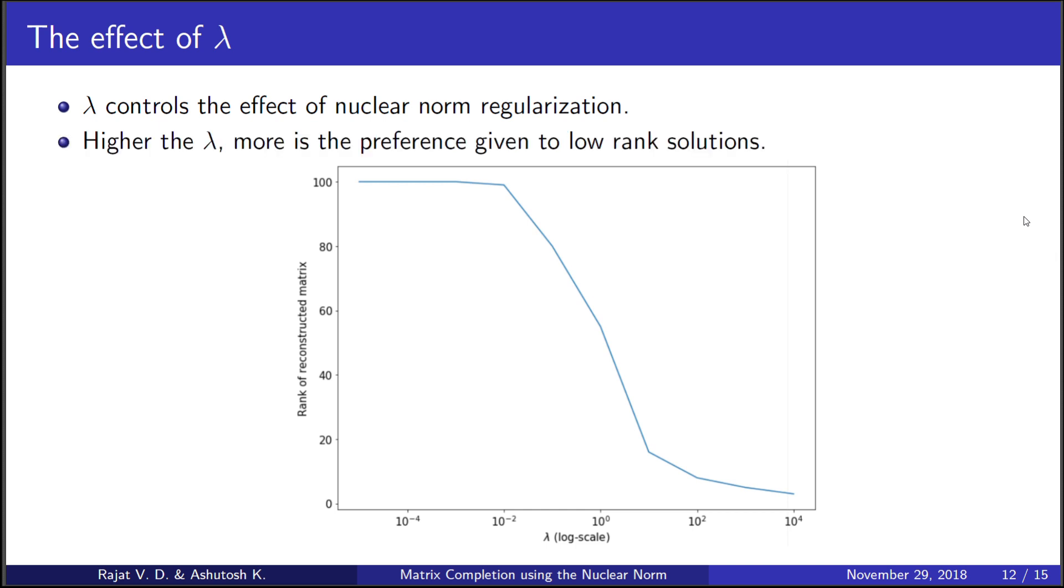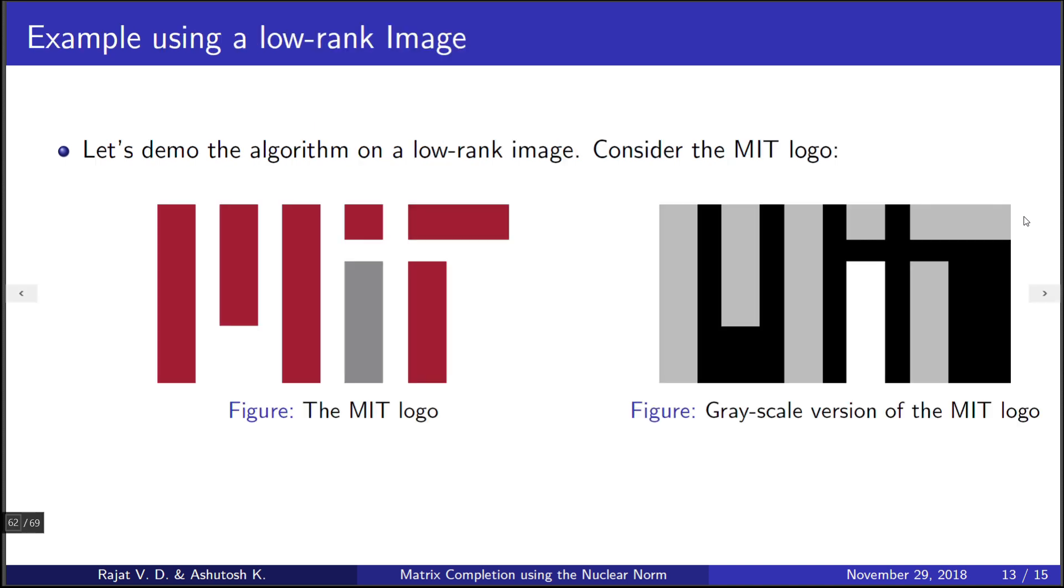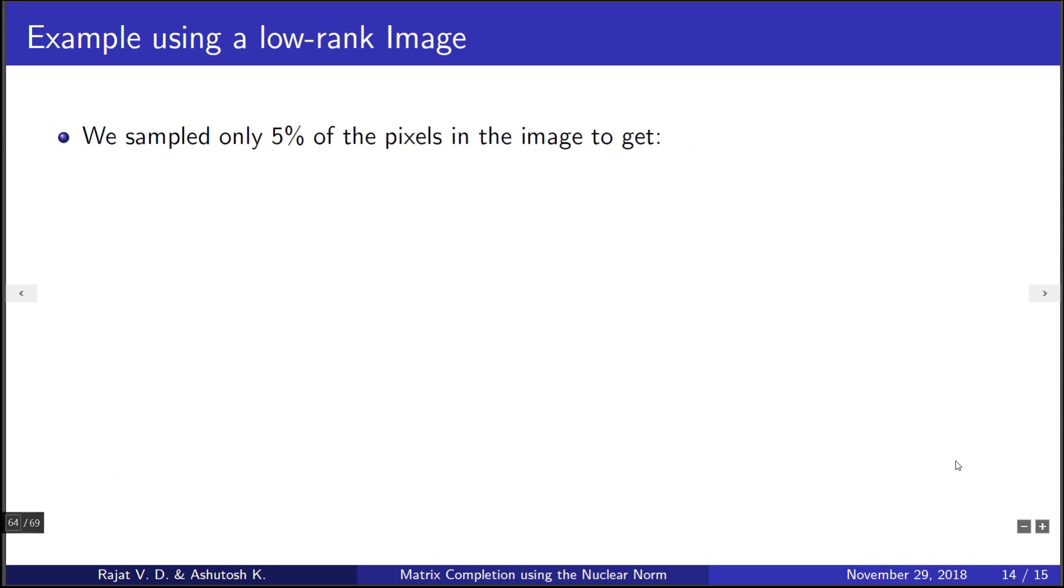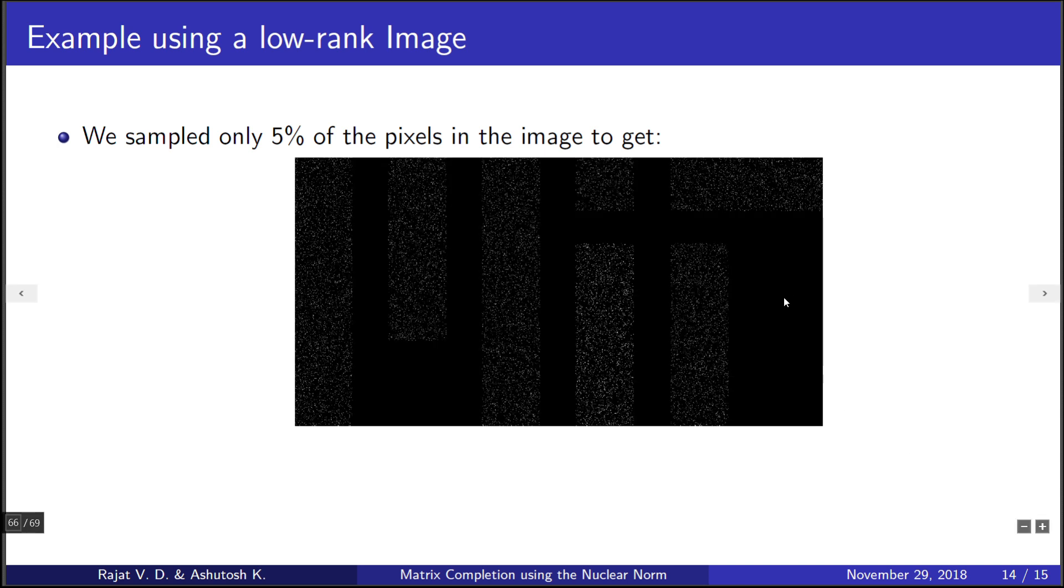To see the algorithm in action, we can use images. Images are just a grid of pixels which can be represented as matrices whose entries are the intensities of the pixels. Consider this image of the MIT logo and its grayscale version. It has some sort of structure to it, with bands of pixels having the same intensities. We would expect this sort of matrix to have a lower rank. To simulate the measurement procedure, we sampled only 5% of the pixels to get this image. Black pixels here denote the ones which we did not measure.